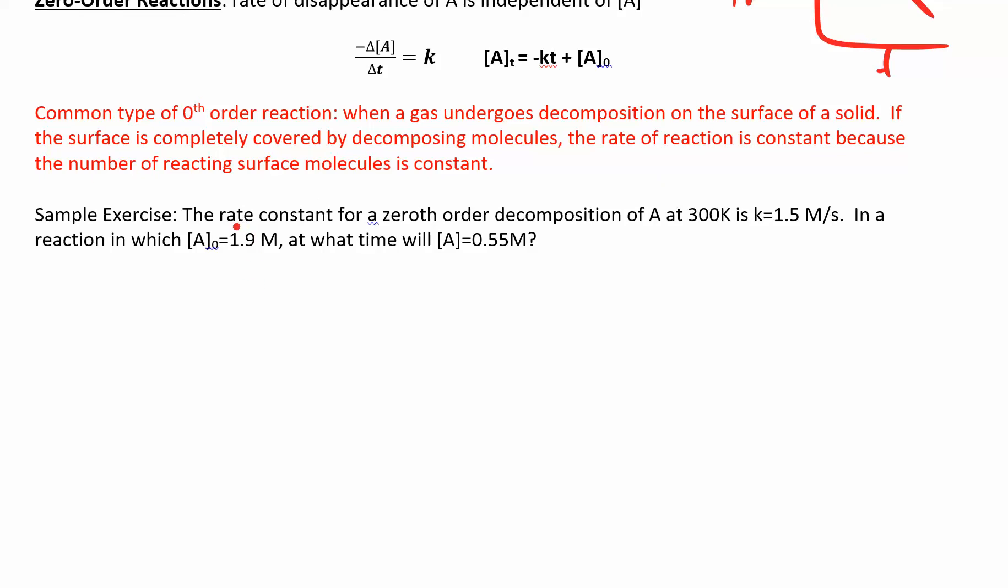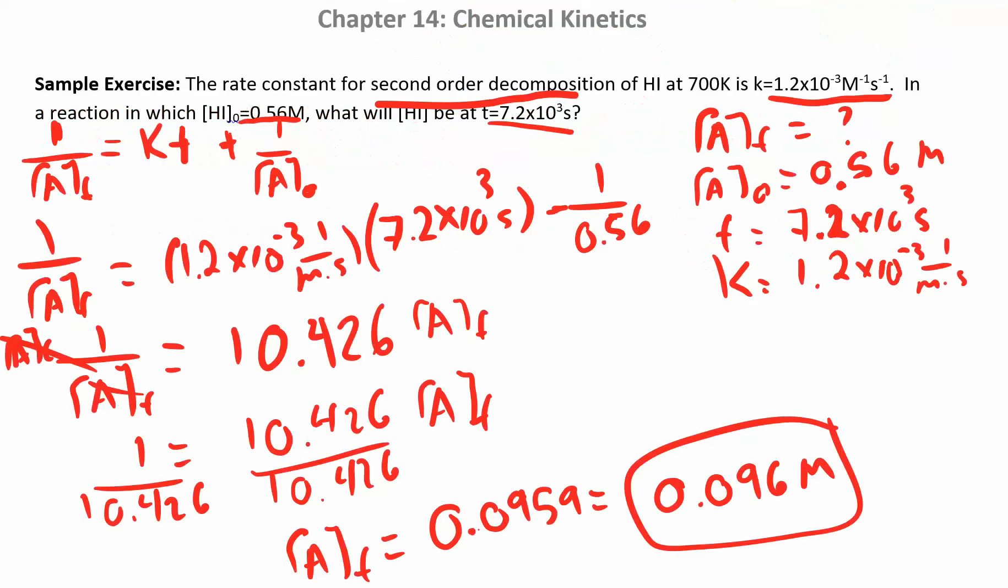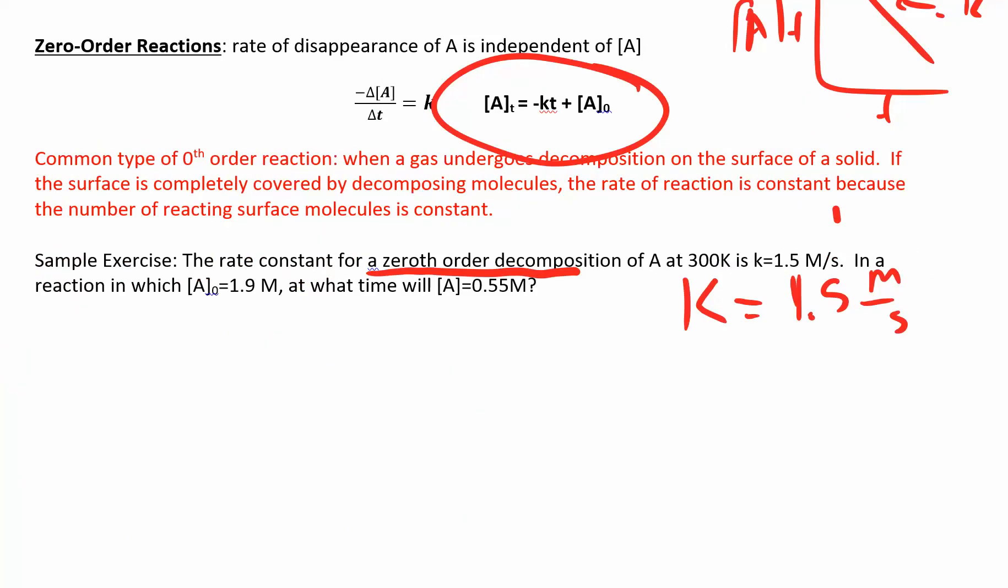All right. Let's see. So the rate constant for a zeroth order decomposition. Okay. So they tell you you have zeroth order, which means you're going to use this equation and you don't worry about the temperature. I tell you K is 1.5. Notice how the units of K are always changing depending on what the order of the reaction is. They give us an initial concentration of 1.9 and A at some time later is 0.55 molar. These are both molar. So that makes sense that that time sometime later, it's going down and they want to know what time, find the time.